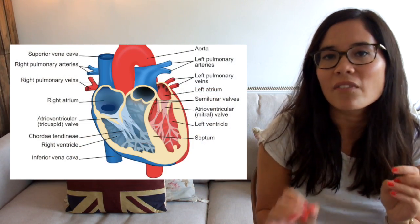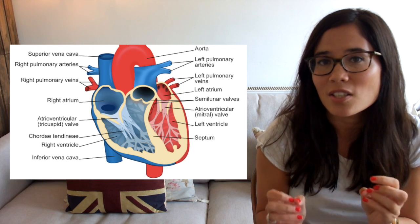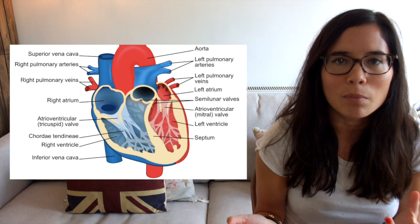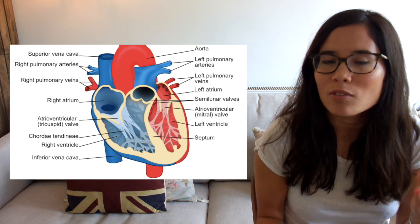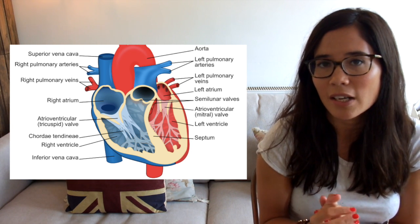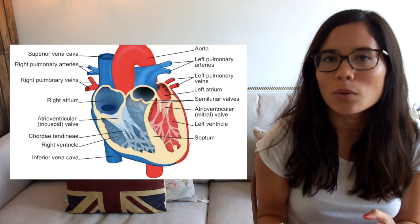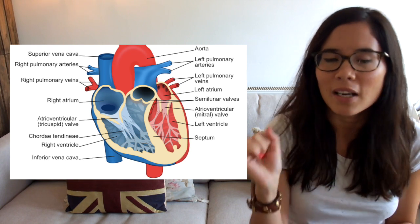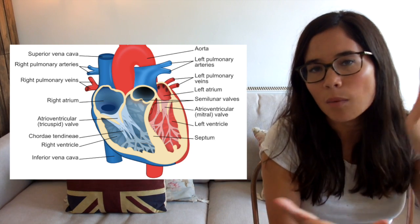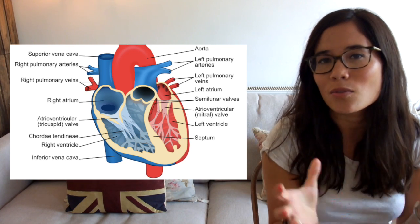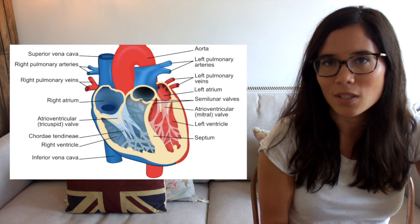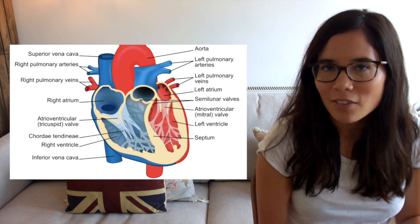On the left-hand side, you have the bicuspid valves, otherwise known as mitral valves. I would recommend remembering their third name, which is the atrioventricular valves, because it makes sense - they lie between the atrium and the ventricles. On the right-hand side, you have tricuspid valves, also called atrioventricular valves, and they control blood flow between the right atrium and the right ventricle.